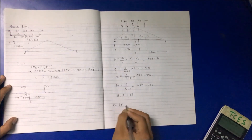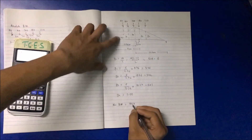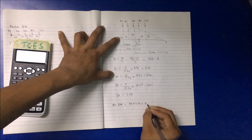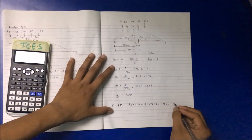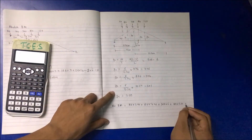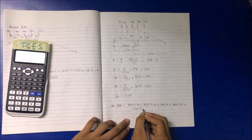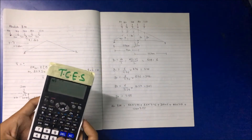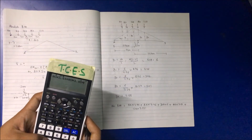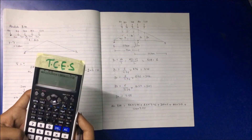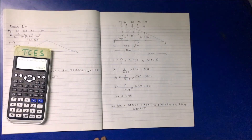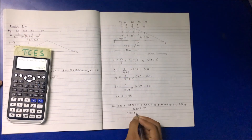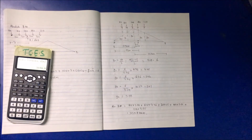The absolute bending moment equals 80 multiplied by y₂ (3.44), plus 80 multiplied by y₁ (4.46), plus 200 multiplied by y₀ (6), plus 180 multiplied by y₃ (5.01), plus 120 multiplied by y₄ (3.55). This gives a maximum absolute bending moment of 3159.8 kilonewton-meters.